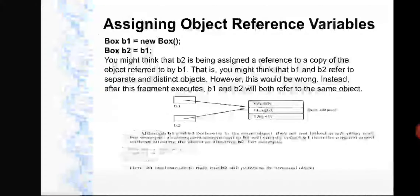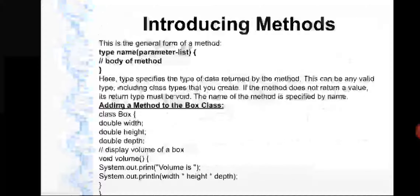This is what you need to understand about object reference variables. Next is introducing methods. In most programming languages we say functions, but in Java and C# we use the term methods — both are the same, don't get confused. The general form of a method is: a return type, followed by the method name, followed by a parameter list. Any number of parameters can be taken, and inside the method body you write whatever code you want.